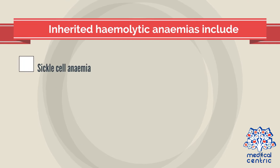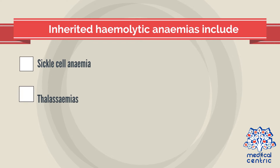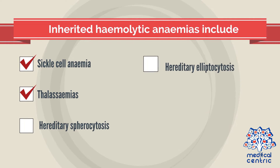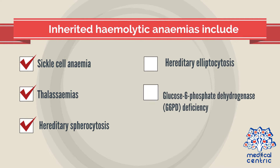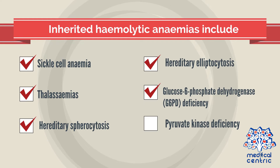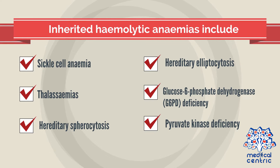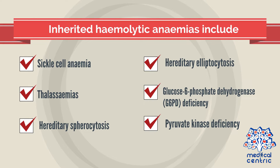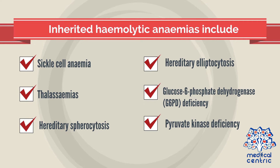Inherited hemolytic anemias include sickle cell anemia, thalassemias, hereditary spherocytosis, hereditary elliptocytosis, glucose-6-phosphate dehydrogenase or G6PD deficiency, and pyruvate kinase deficiency.